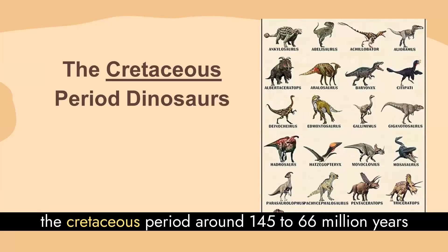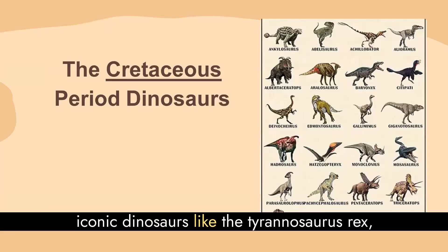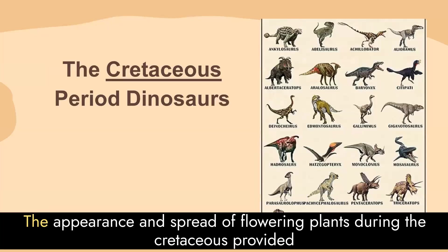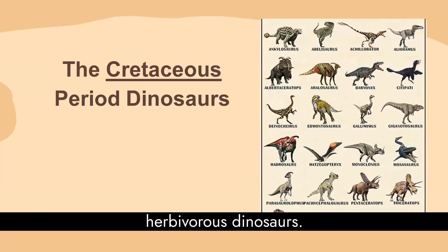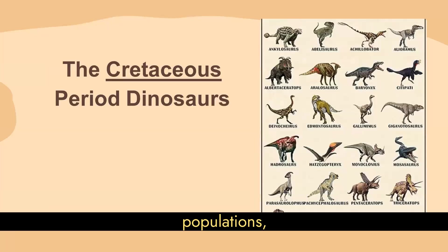The Cretaceous period, around 145 to 66 million years ago, featured the peak of dinosaur diversity. Iconic dinosaurs like the Tyrannosaurus rex, the Triceratops, and the Velociraptor all lived during this time. The appearance and spread of flowering plants during the Cretaceous provided new food sources and influenced the evolution of herbivorous dinosaurs. The continued breakup of continents led to more isolated dinosaur populations, fostering further diversification.